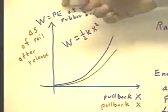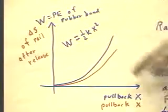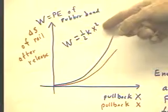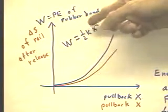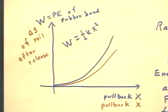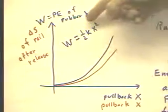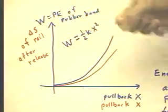So we say that the work done is the potential energy of the rubber band, and remember that work was one-half kx squared, where k is the force constant of the rubber band. That force constant is measured in newtons per centimeter of stretch.